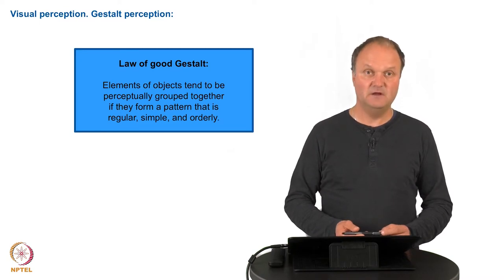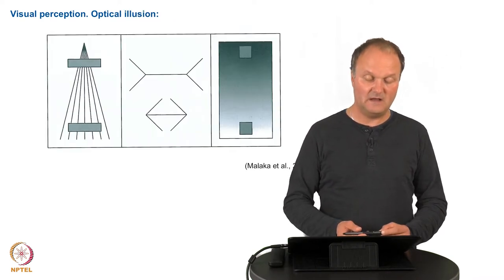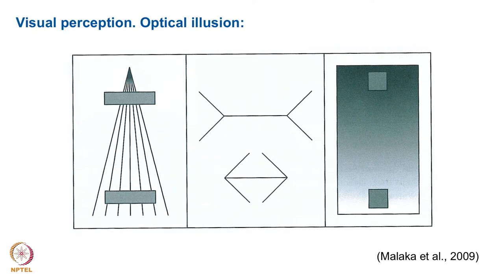Now there might be some illusions in this perception and you probably know some of them. Here you see an example. For example, on the left panel it seems that the upper square is a little bit larger than the lower square but this actually comes only from these touching lines in the middle. The same applies for the middle panel where it seems that the upper middle line is a little bit longer than the lower one.